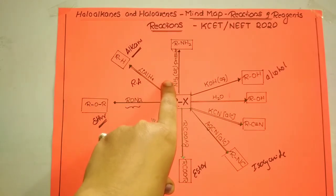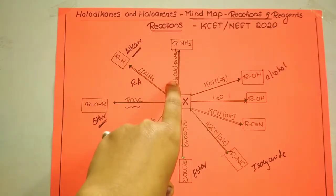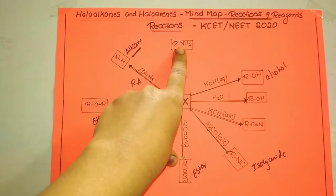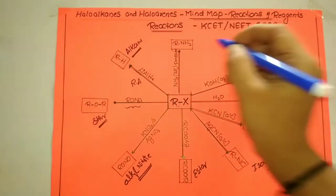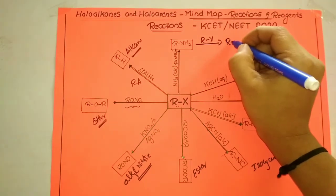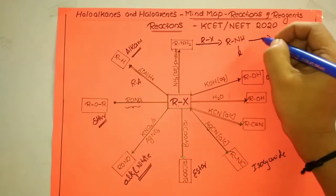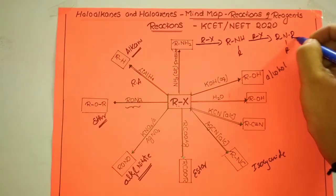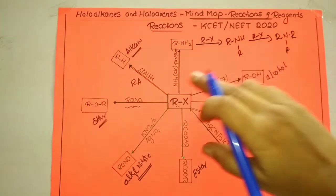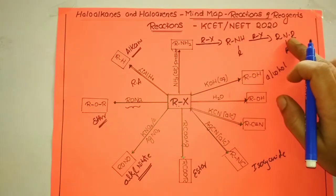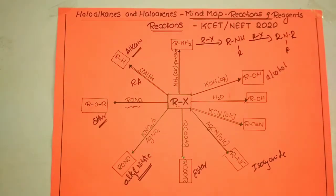When alkyl halide is treated with alcoholic ammonia under pressure, it results in the formation of the respective primary amine. When this amine is treated with excess alkyl halide again, a secondary amine is formed, and further treatment gives a tertiary amine. This process is known as aminolysis, and it will be studied in detail in the amines chapter.